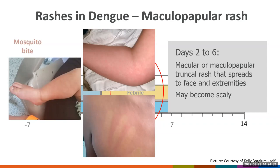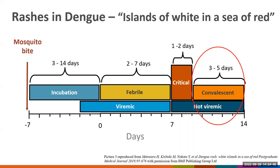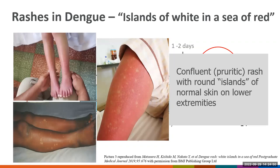During the convalescent phase, patients can present with a very characteristic rash known as 'islands of white in a sea of red' — the islands being the normal skin — usually presenting in the lower limbs. The rash can be very pruritic, and there are cases where patients with mild symptoms during the febrile phase only come to see physicians during the convalescent phase because of the discomfort from this pruritic rash.